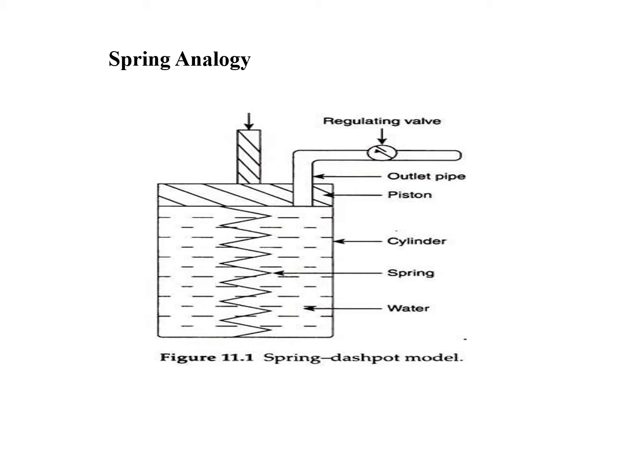Let the initial stress in the spring be sigma naught dash, under its own weight and that of the piston, and the spring is deformed due to this stress. Suppose a load is applied on the piston when the valve is in the closed condition, so as to cause an additional stress of delta sigma on the spring-water system. If the spring has to share this additional load it has to undergo deformation. As the water filling the dashpot is incompressible, it will not allow the deformation of the spring. So as the spring cannot deform, it cannot take any additional stress, and thus the entire additional stress applied will be taken by the water in the dashpot.